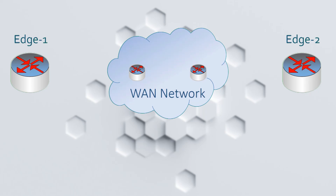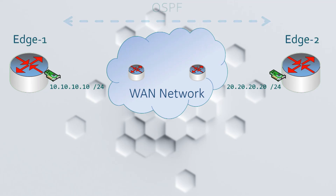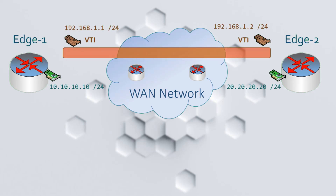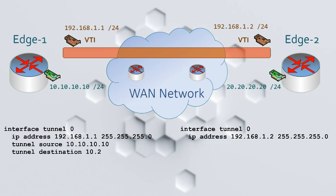Now it's time to see how GRE tunnels actually work. We have a scenario with two edge routers and two WAN routers. We manage the edges, but we have no control over the WAN — they're managed by a service provider. We want to run OSPF between our edge routers, and for that we need them to be directly connected. The workaround is to create a tunnel between them. GRE tunnels use a virtual tunnel interface, or VTI. Tunnel interfaces are much like regular interfaces, including setting the IP address and mask. We also need to set the source and destination of the tunnel — these are the IPs used in our WAN network. That's the minimum needed to get the tunnel running, and now it looks like the routers are directly connected. We could now easily configure OSPF and the neighbours would come up.